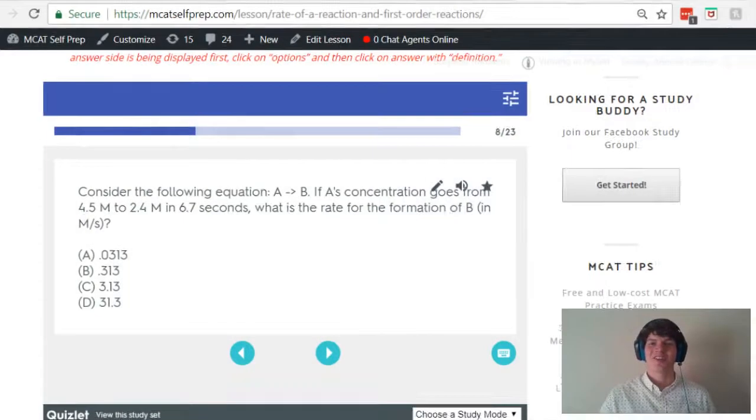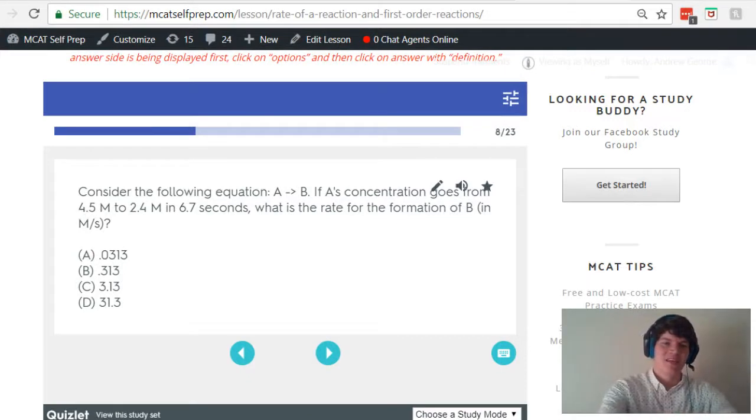Taking a second look at our answer choices, it looks like answer choice B, 0.313, is going to be the closest to my approximated answer of 0.33.